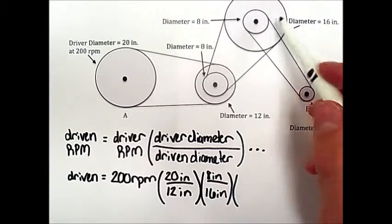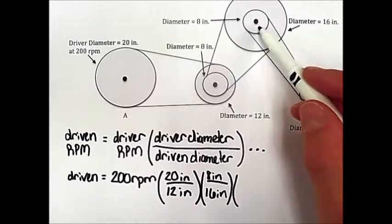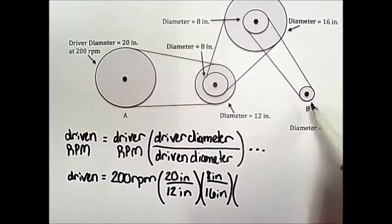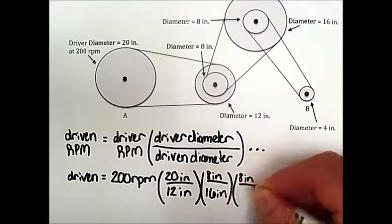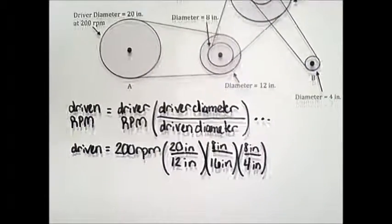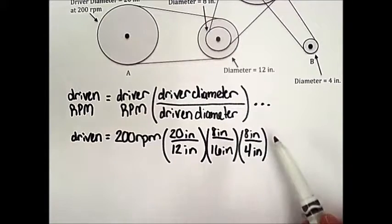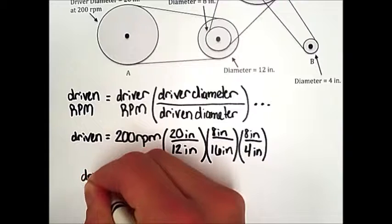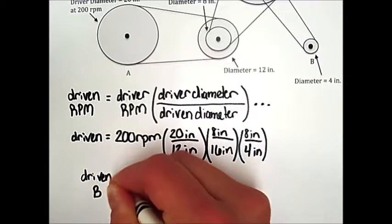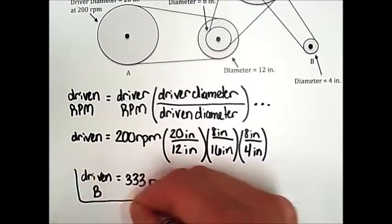Lastly, this larger pulley is on the same shaft as the smaller pulley with a diameter of 8 inches. So this pulley is driving pulley B: 8 inches for our diameter divided by the 4-inch diameter of pulley B. Now that we have the problem set up we can multiply across: 200 times 20 divided by 12, times 8 divided by 16, times 8 divided by 4. The speed of the driven pulley B is equal to approximately 333 revolutions per minute.